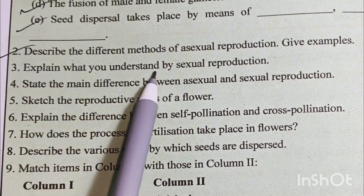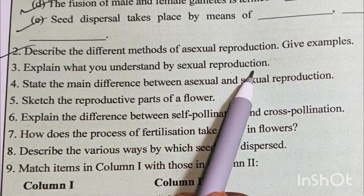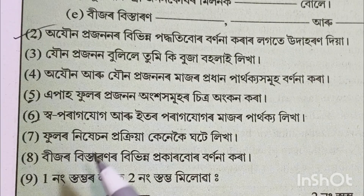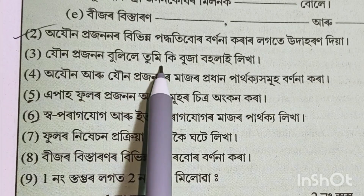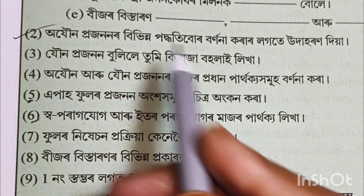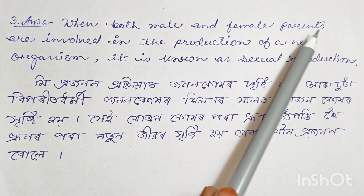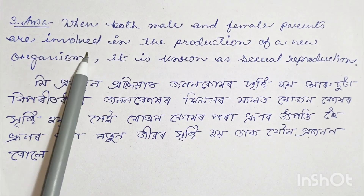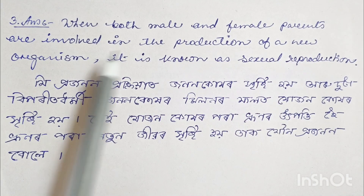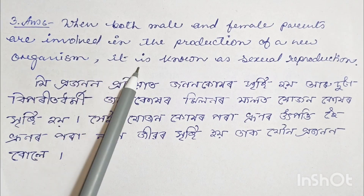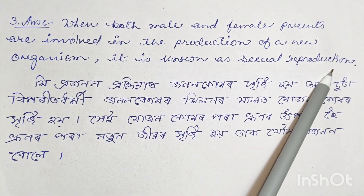Question number 3: Explain what do you understand by sexual reproduction. When both male and female parents are involved in the production of a new organism, it is known as sexual reproduction.